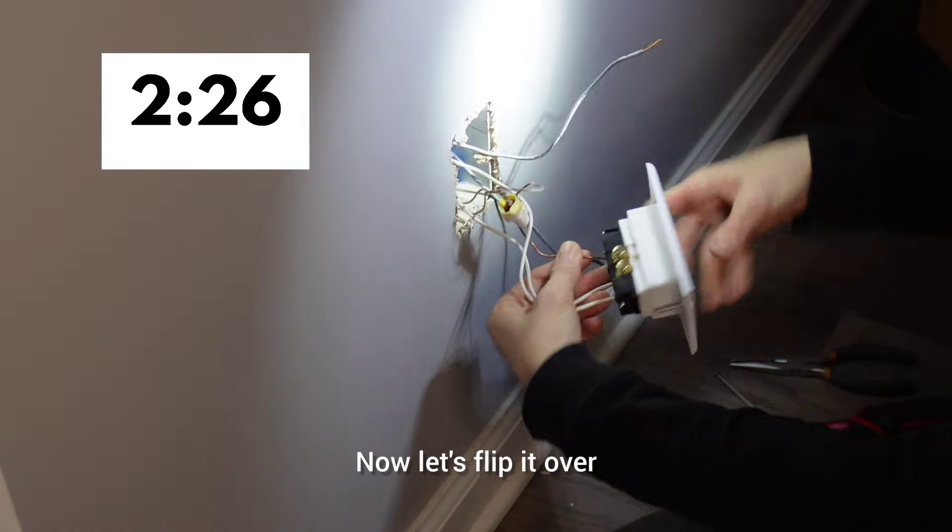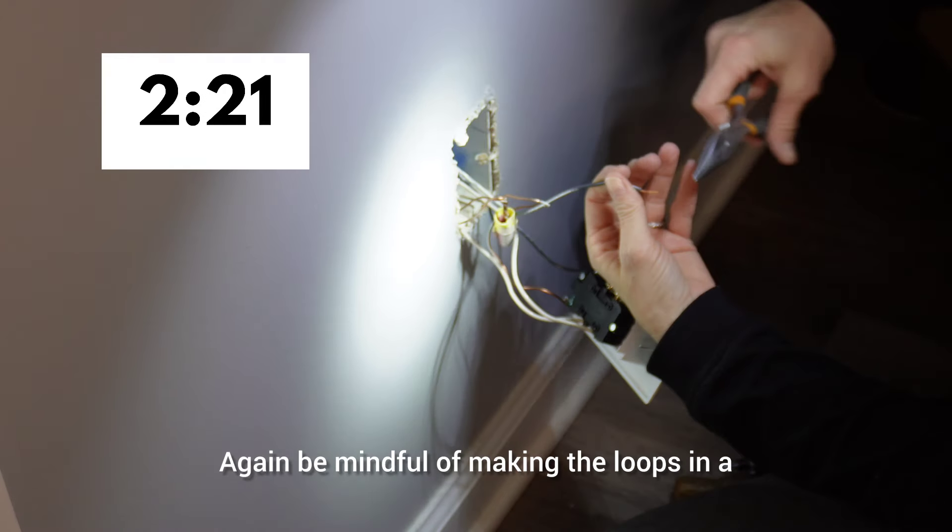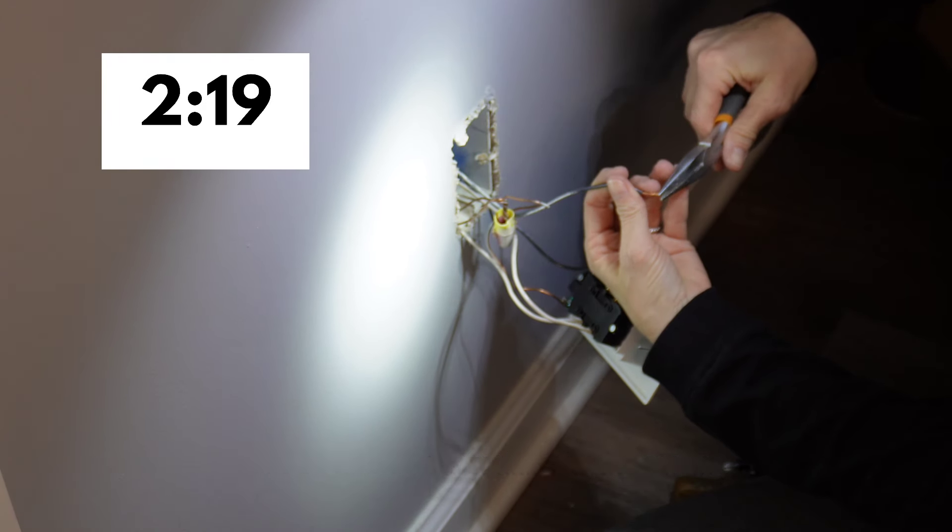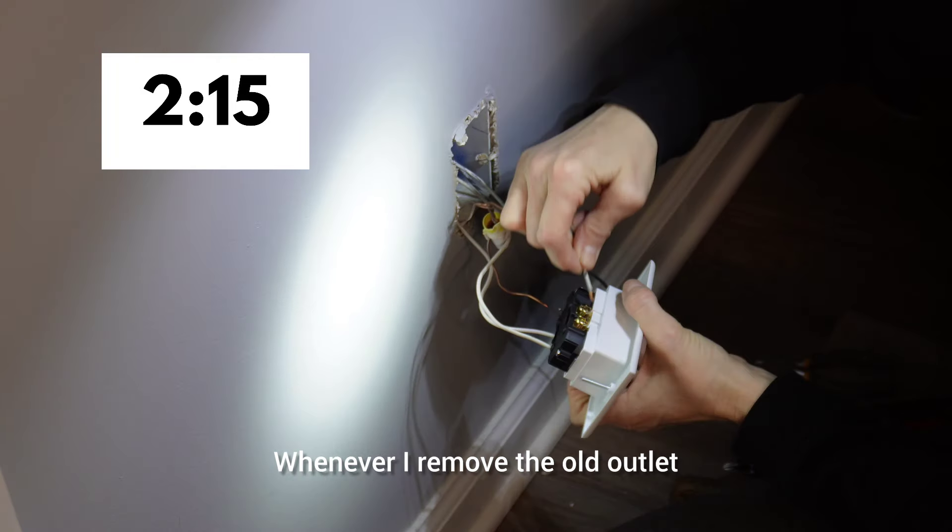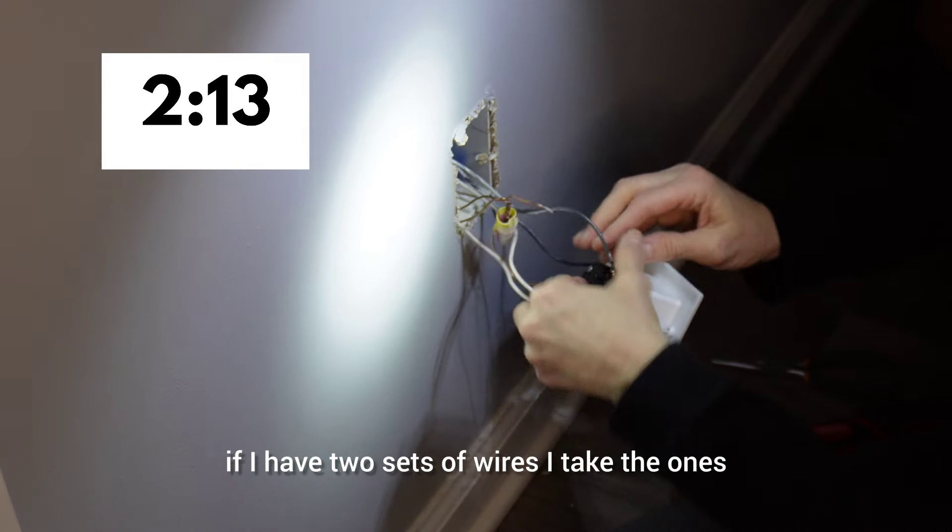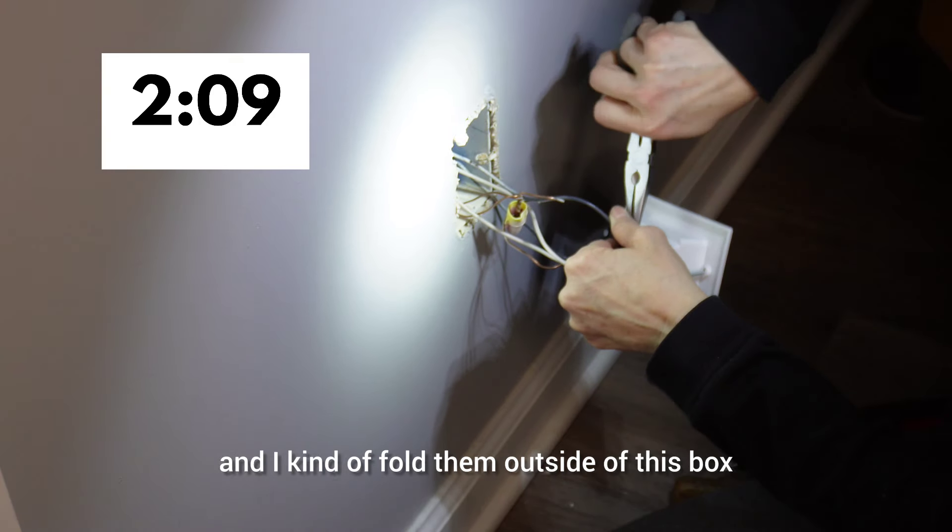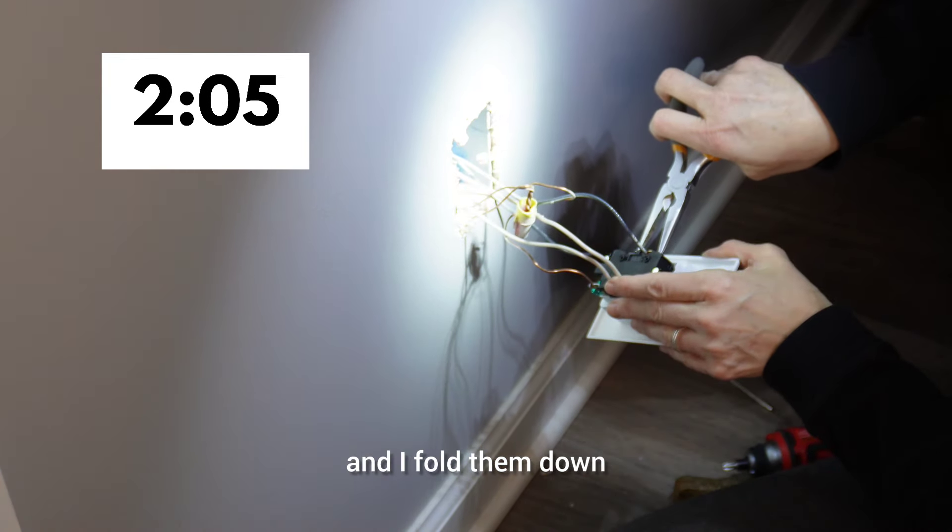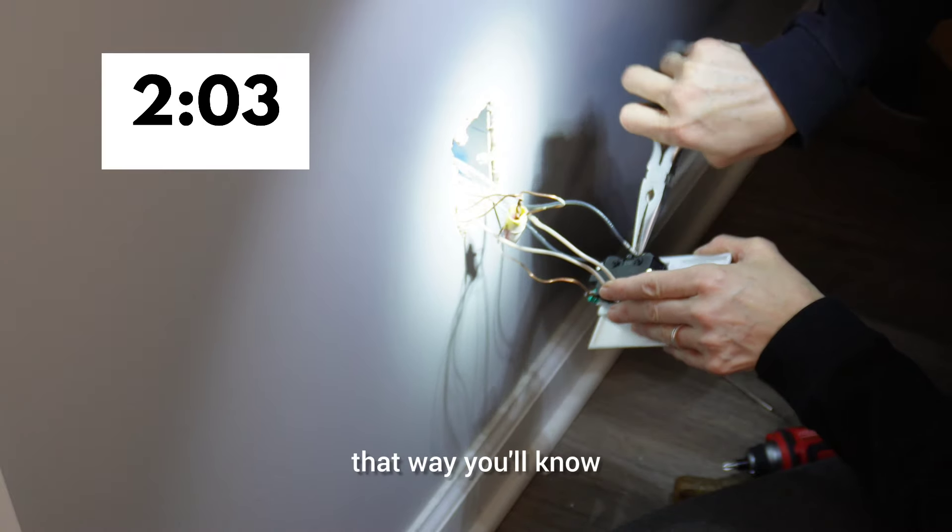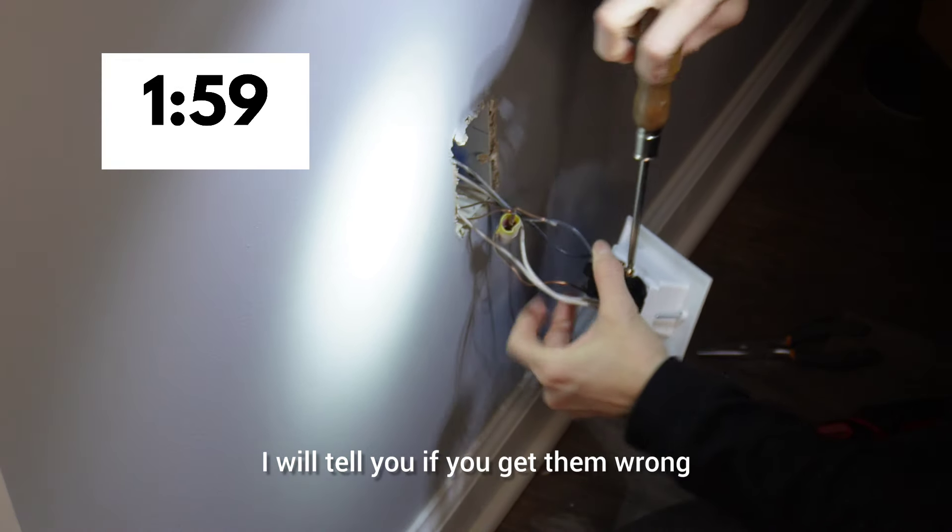Now let's flip it over and work on the brass side, the brass screws. Again, be mindful of making the loops in a clockwise direction around the screw. Whenever I remove the old outlet, if I have two sets of wires, I take the ones that were in the top of the old outlet and I kind of fold them outside of this box here up the top of the wall, and I take the ones that were at the bottom and I fold them down. Or you could label them. That way you'll know where they go on the new outlet. I will tell you if you get them wrong, it's not a big deal.